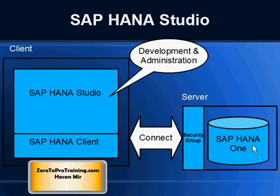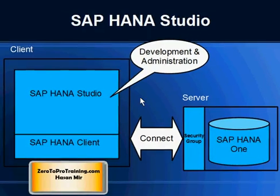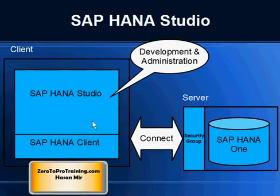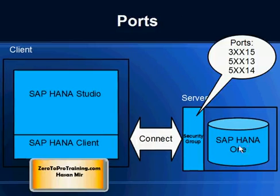Now the question is: what is a security group and what does it do? A security group, as the name suggests, controls the security of the traffic going from external machines into this virtual machine. In our case, we will be making a connection from SAP HANA Studio, so the required ports have to be opened. The security group dictates whether traffic can go into this virtual machine from outside on those ports. In order for SAP HANA Studio to make a connection with the HANA 1 database, the following ports must be open.